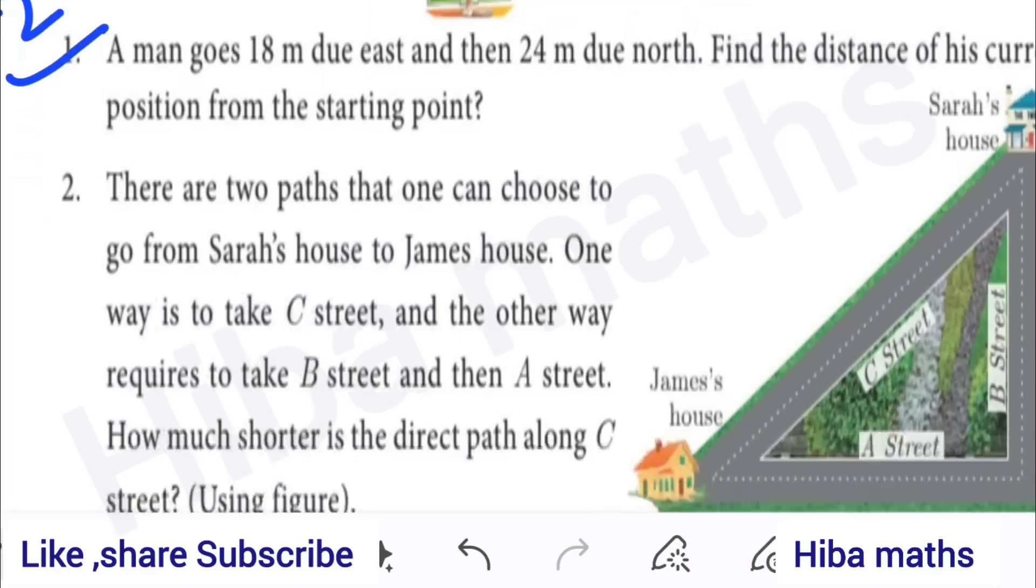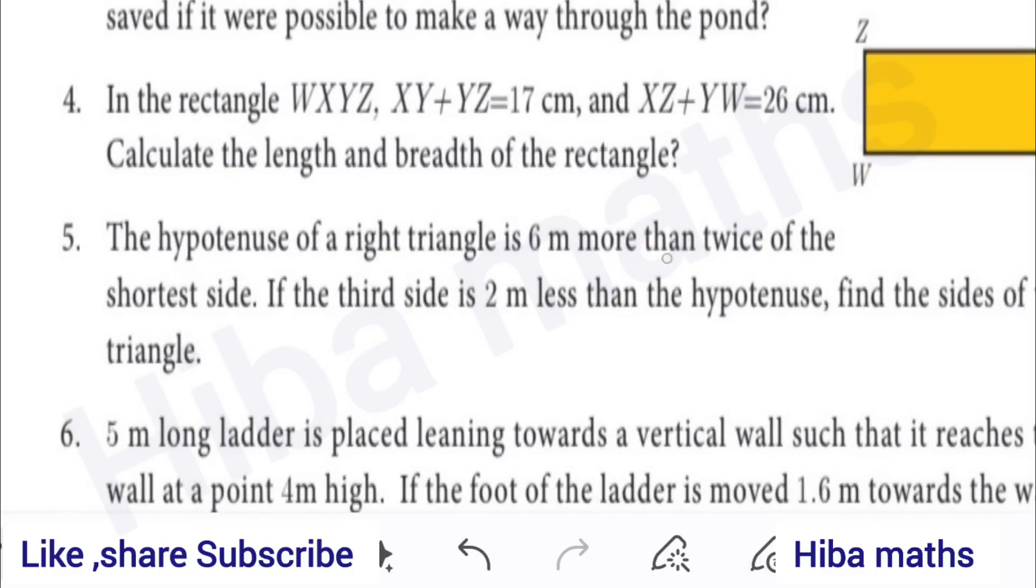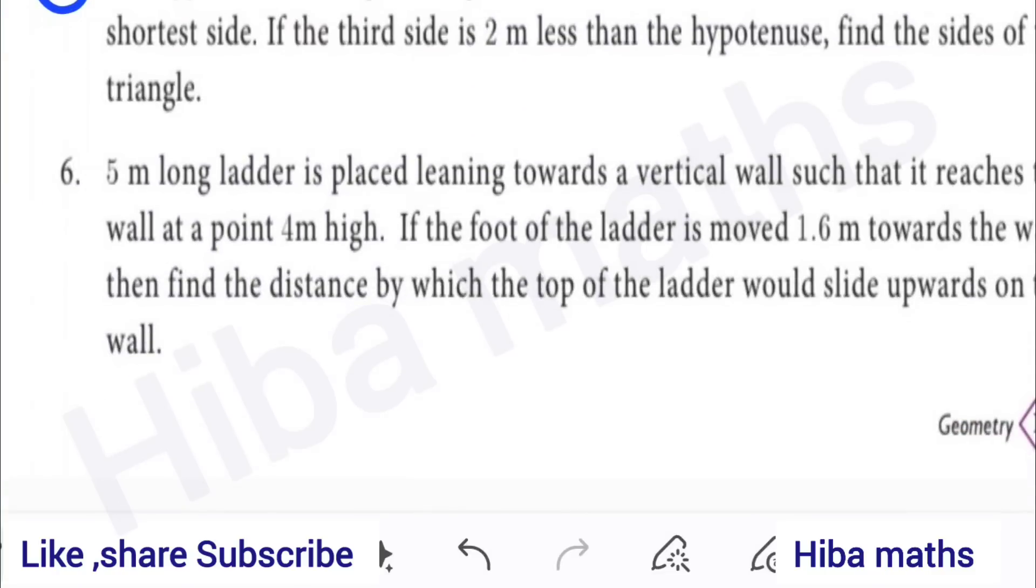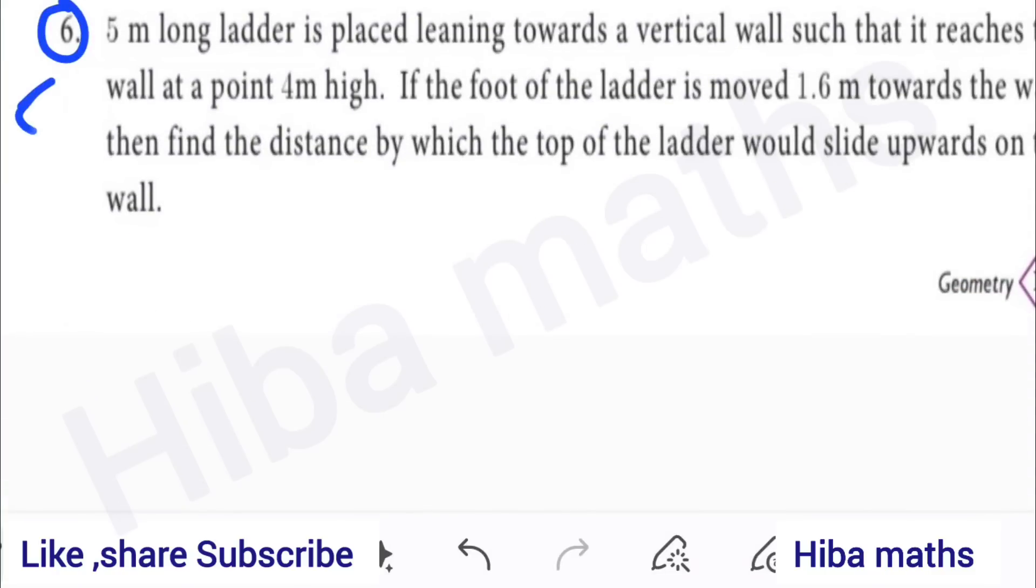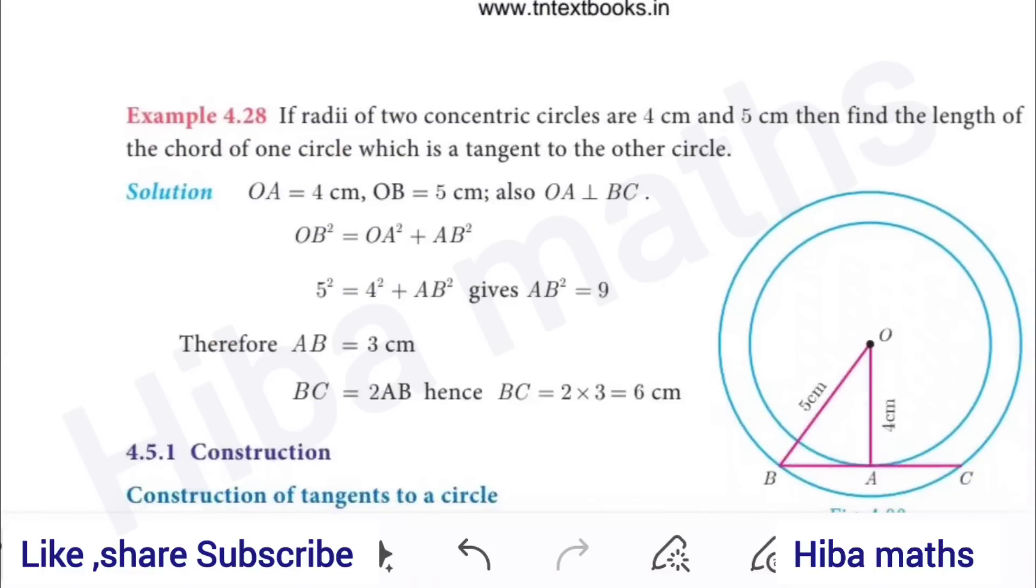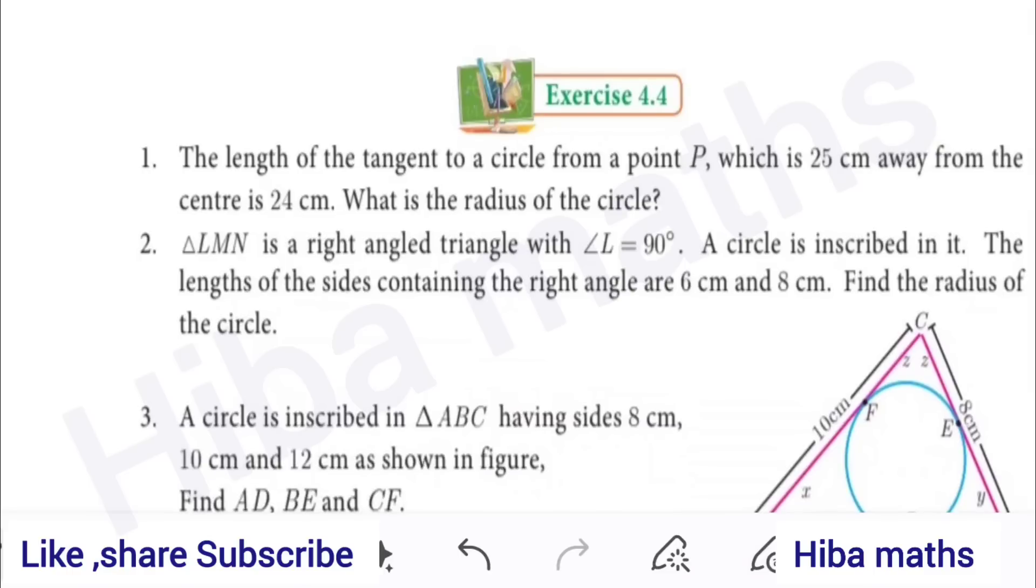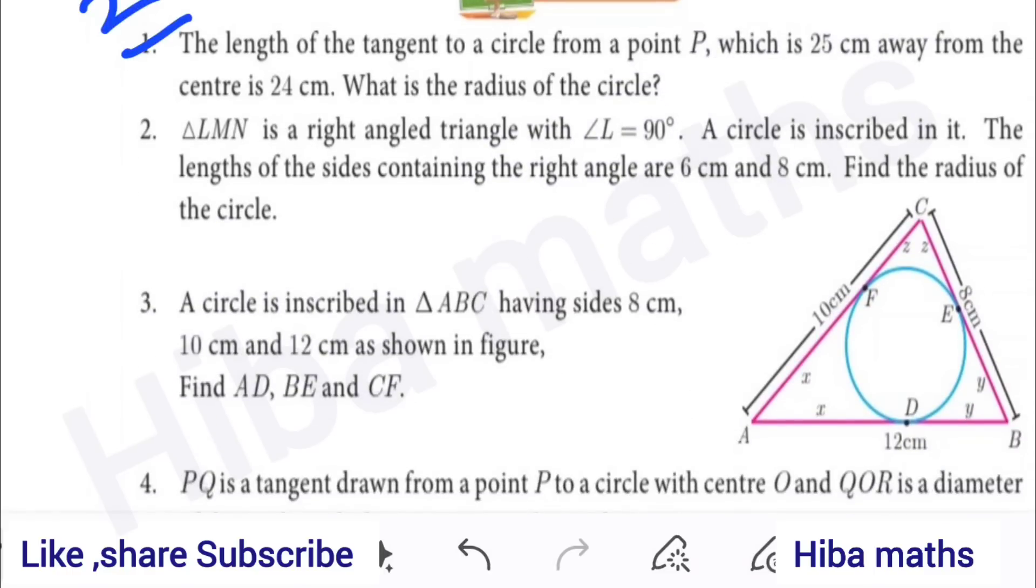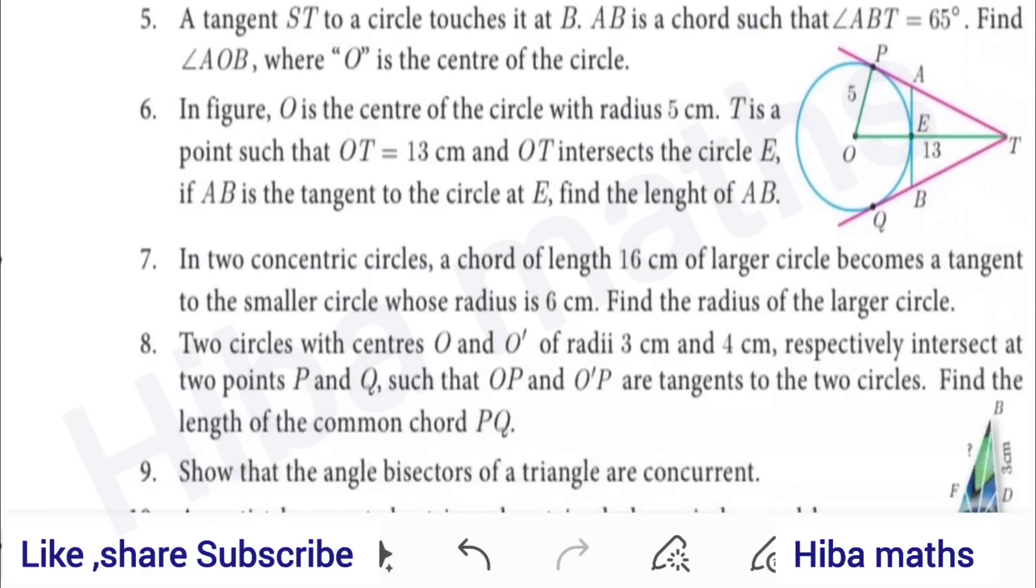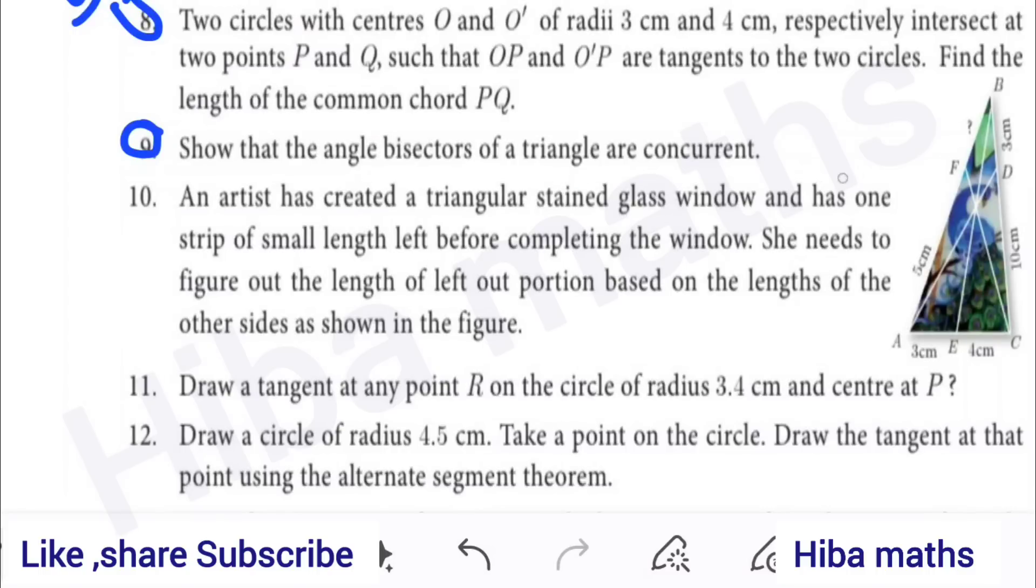In 4.3, 1st question, 2 mark. 3rd question, 2 mark. That is the question. 4th question, 5th question, 5 mark. 6th question, 5 mark. 4.3, 2 mark. Now, this is 2 mark. It is easy to apply Pythagoras theorem. Now, you can substitute value. In 4.4, 1st question, 2 mark. Then, 8th question, 5 mark. And, the angle bisector of a triangle are concurrent. This is 3 mark.